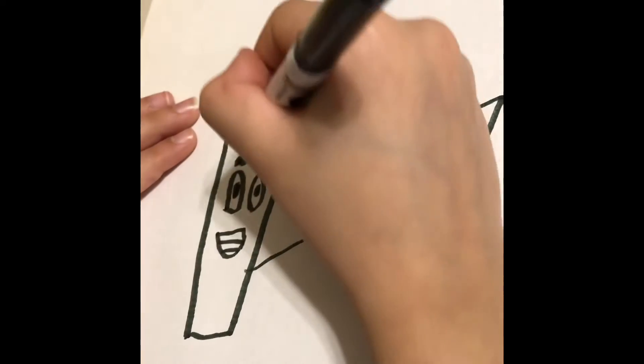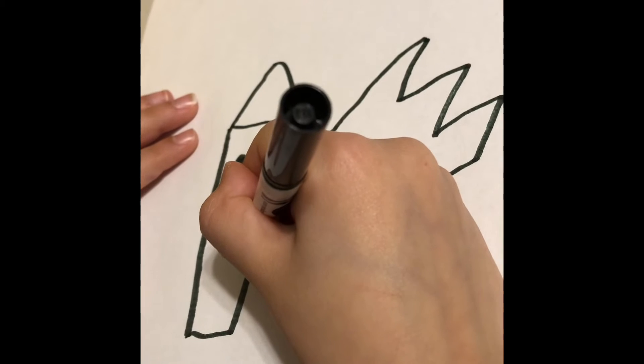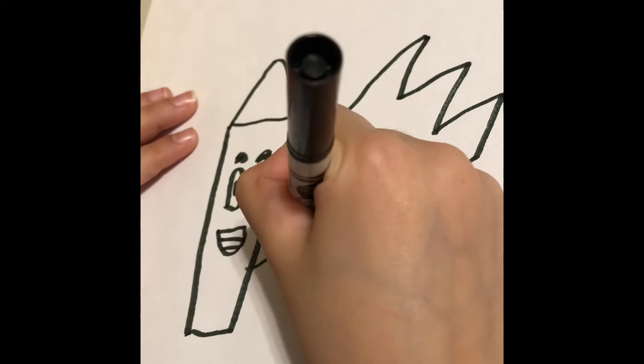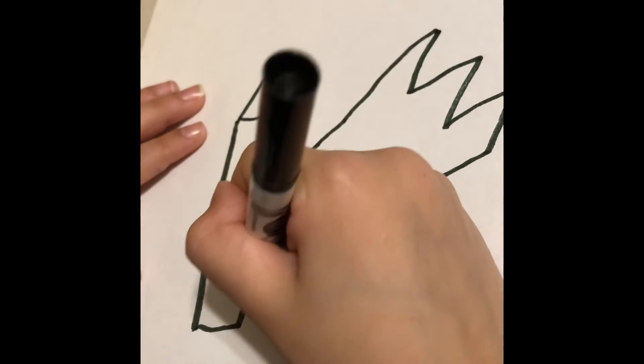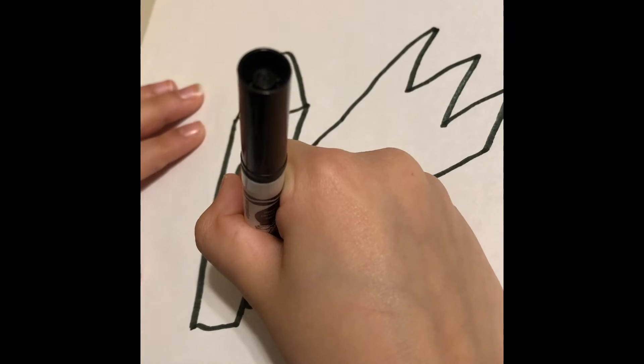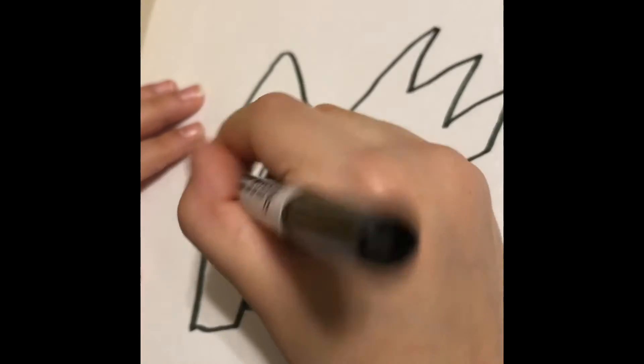Now we're going to do his arms. First, we're going to do into the cape, and then down. And then we're going to do like a curve shape. Then we're going to do line back, then line there.